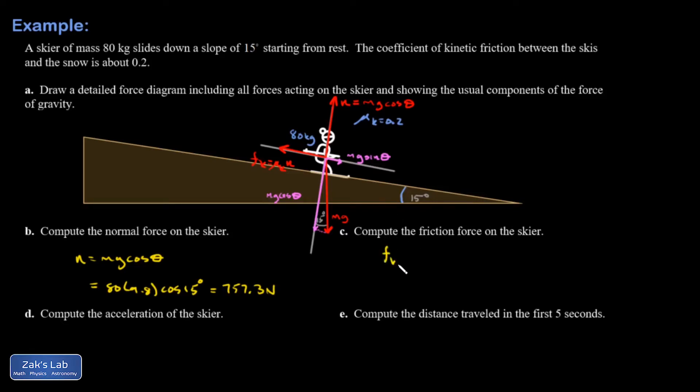And we'll just do the calculation real quick. So Fk is mu k times the normal force. And I think I've got everything I need. So 0.2 times 757.3. That's 151 and a half. Just keeping a little extra precision for later on.